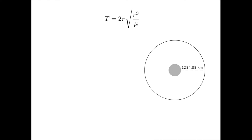First, we need to make this an orbital radius by adding the radius of the moon, which is 200 kilometers. So the r for the formula is 1,454.85 kilometers or 1,454,850 meters. You have to use meters for this formula.